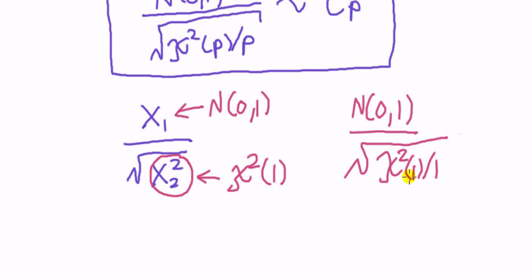So standard normal over the square root of a chi-square divided by its degree of freedom, which we have here. And the degree of freedom here is one. So this thing is t-distribution with one degree of freedom.